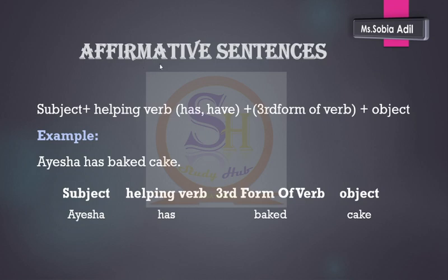This is the structure of affirmative sentences in present perfect tense. First we write the subject, then comes the helping verb, then we write the third form of verb, and then comes the object at the end. The example is: 'Aisha has baked cake.' Aisha is the subject, 'has' is the helping verb, 'baked' is the third form of verb, and 'cake' is the object.